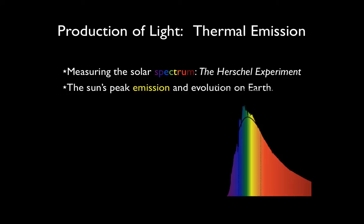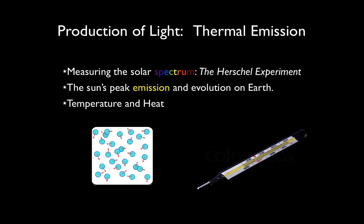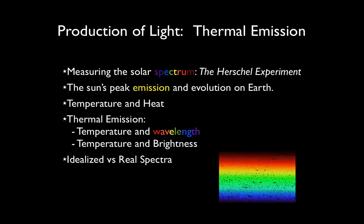How is light from the sun generated? We're going to find that hot things produce light, and in order to understand why, we'll have to talk about what temperature and heat mean on a molecular level. Once we understand the source of thermal emission, we will discuss how the wavelength and brightness of that emission varies according to the temperature. We'll end by contrasting these idealized spectra to real astronomical spectra and highlight some differences between the two.